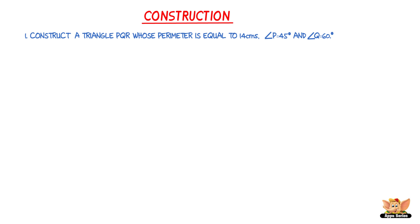In this video, let us learn to construct a triangle whose perimeter and two base angles are given. Here is a question: the perimeter of triangle PQR is equal to 14 centimeters. Construct triangle PQR in which angle P equals 45 degrees and angle Q equals 60 degrees.